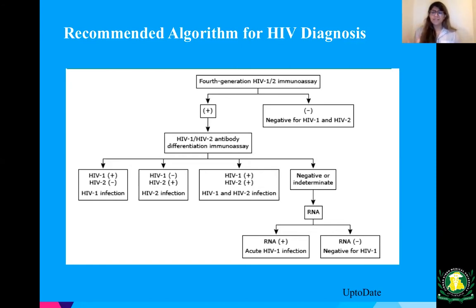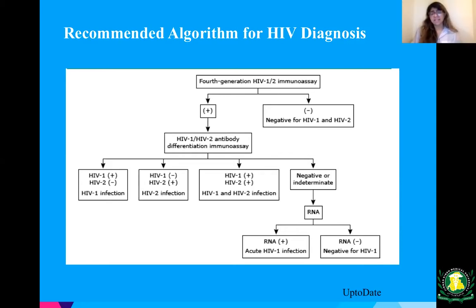If the differentiation test is negative, you need to do more digging and get the RNA level — the viral load I talked about in the first lecture. If that's positive, you have an acute HIV-1 infection. If negative, it's a negative HIV test, meaning the initial result was a false positive.